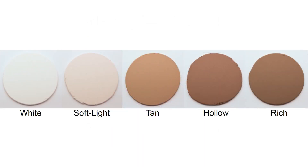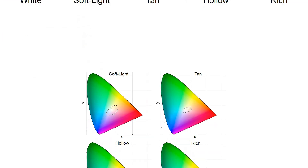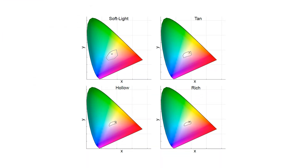We further investigate the tattoo process using substrates simulating different skin tones. Our investigation confirms the assumption that varying skin tones have different color gamuts. Moreover, we can see the white point, marked with X, shift based on the complexion of the sample.